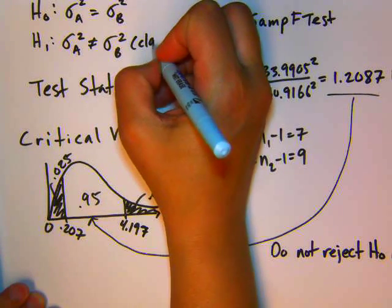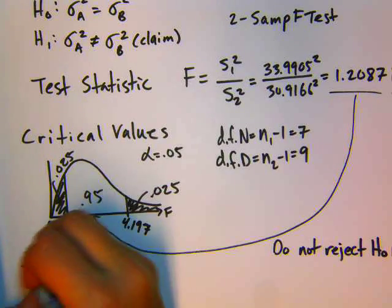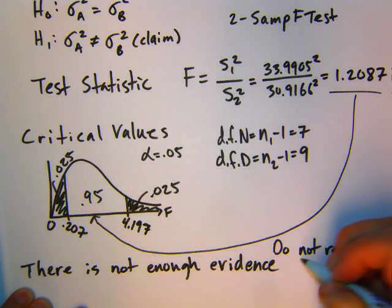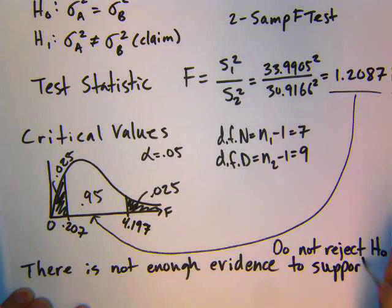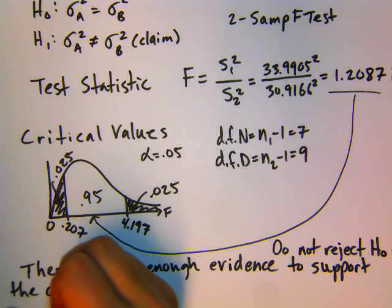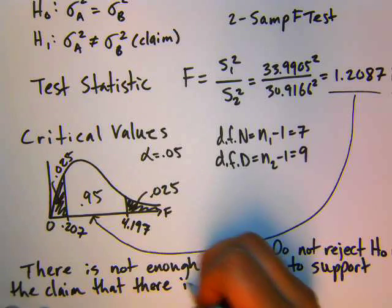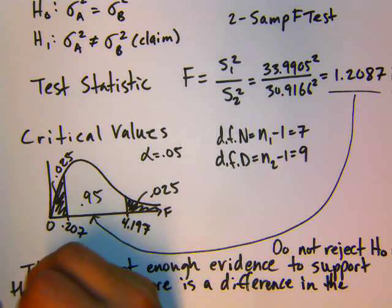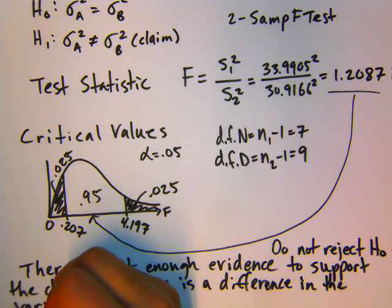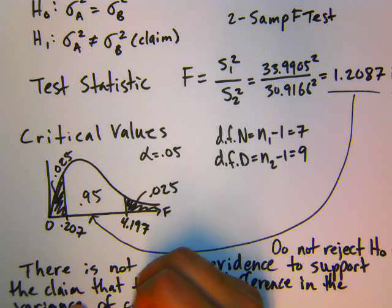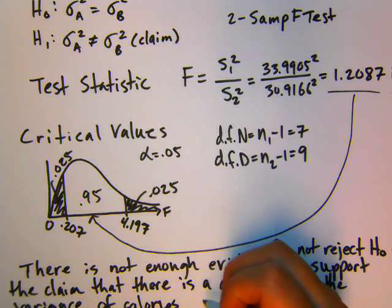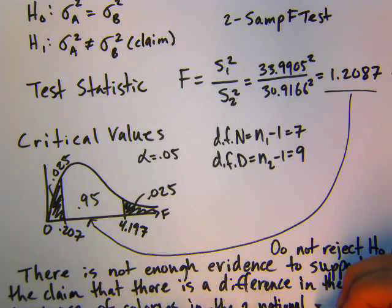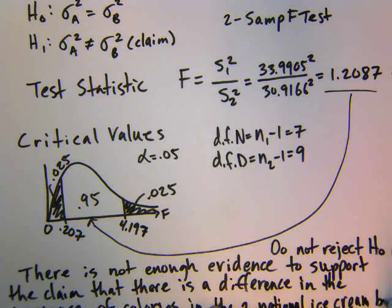And I didn't write it down, but our claim was that there was a difference. So if we don't reject the null, we are not supporting the claim. So there's not enough evidence to support the claim that there is a difference in the variance of calories in the two national ice cream brands.